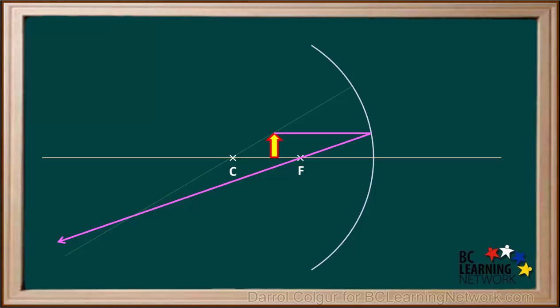A ray from the top of the object will travel along this line to the surface of the mirror, and because this line goes through the center of curvature, it will be reflected straight back along the line.